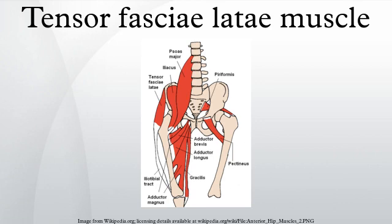The tensor fasciae latae is a muscle of the thigh structure. It arises from the anterior part of the outer lip of the iliac crest, from the outer surface of the anterior superior iliac spine, and part of the outer border of the notch below it, between the gluteus medius and sartorius, and from the deep surface of the fascia latae.